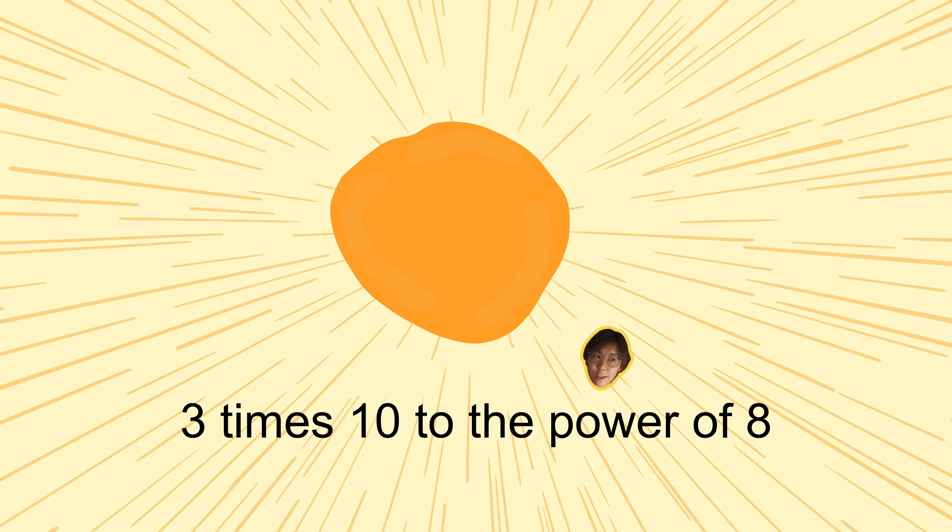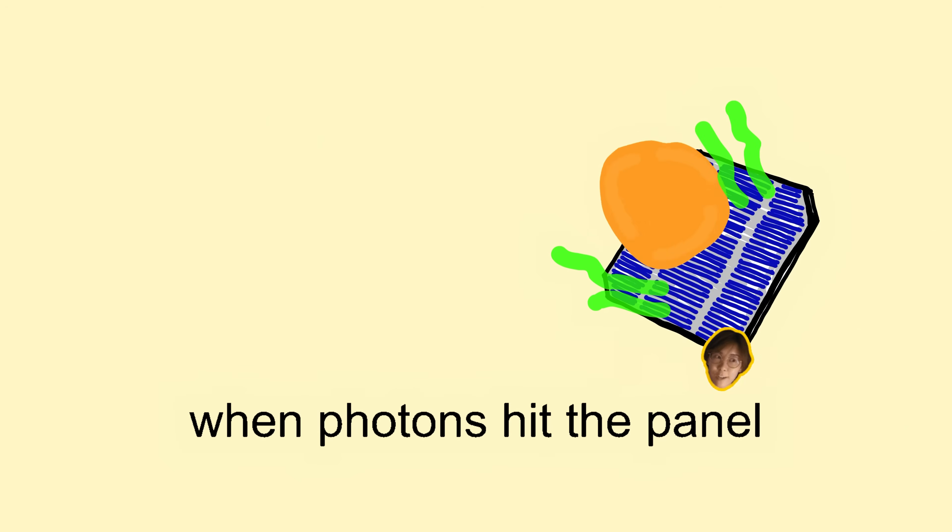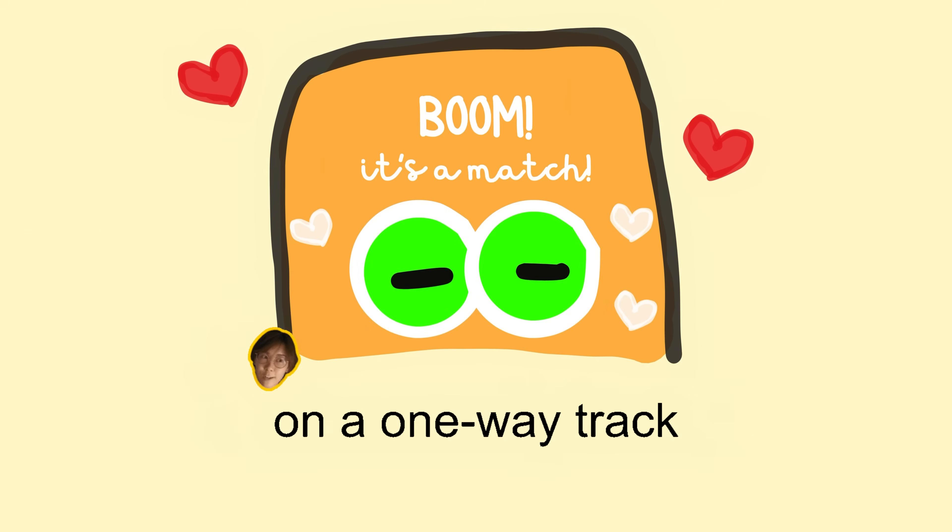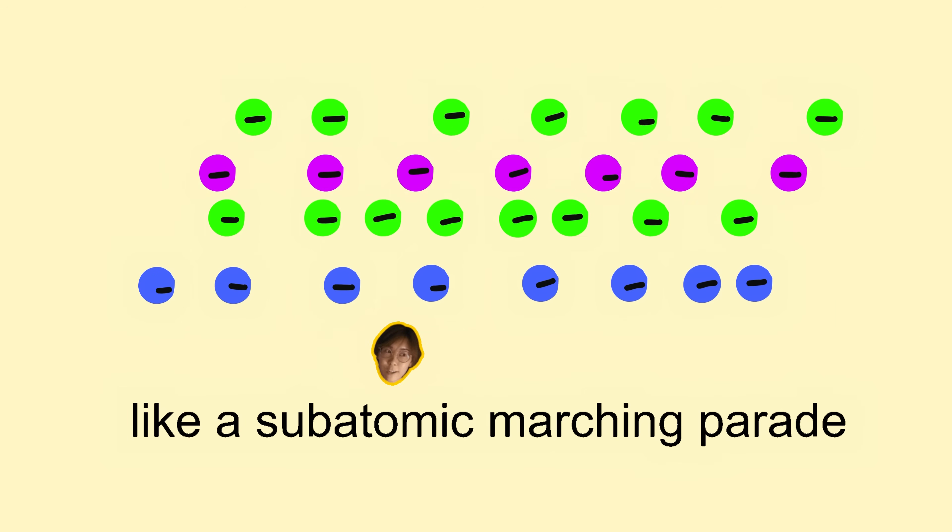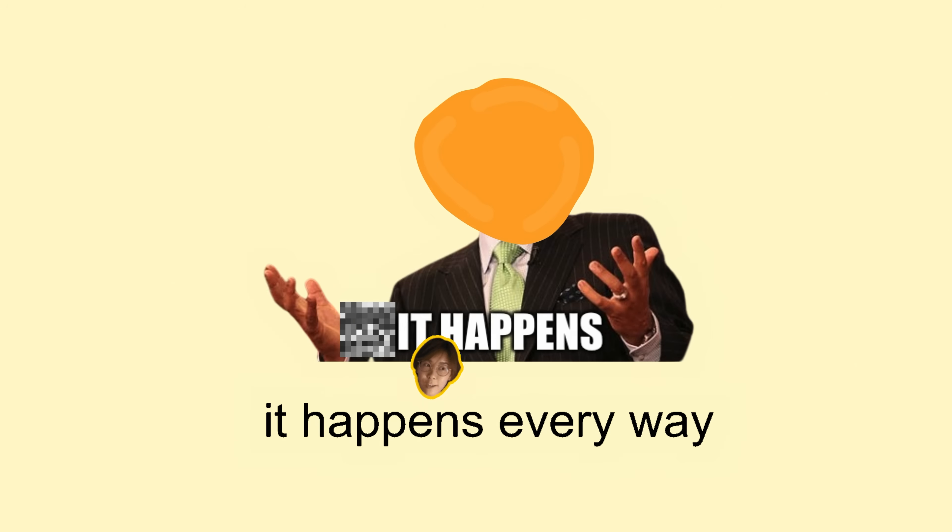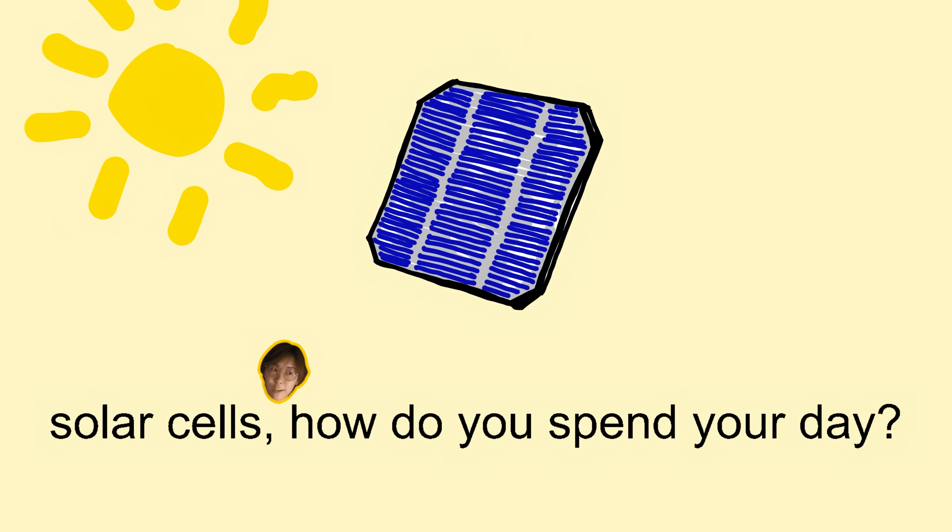Three times ten to the power of eight. When photons hit the panel, electrons start to race from AC to DC, electrons meet their fate on a one-way track like a subatomic marching parade. Oh, photons to power, it happens every day. Solar cells, how do you spend your day?